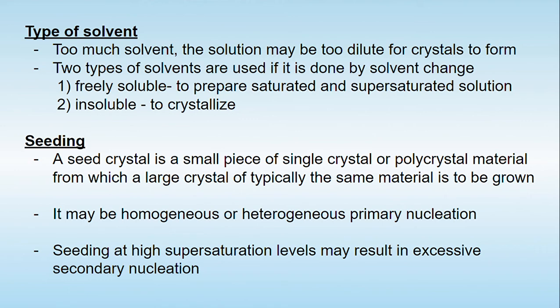Another factor is seeding. A seed crystal is either of the same material or another material from which a larger crystal of the same material is to be grown. Seeding initiates primary nucleation followed by secondary nucleation and crystal growth — it acts as an initiator of the crystallization process. Depending on the material added, it results in either homogeneous or heterogeneous primary nucleation. However, seeding at a higher supersaturation level may result in excessive secondary nucleation, which affects crystal growth.